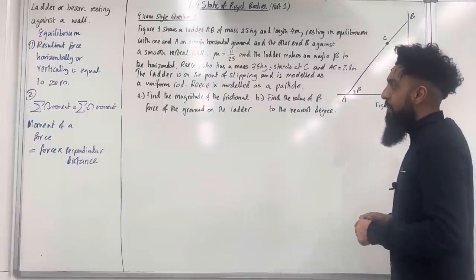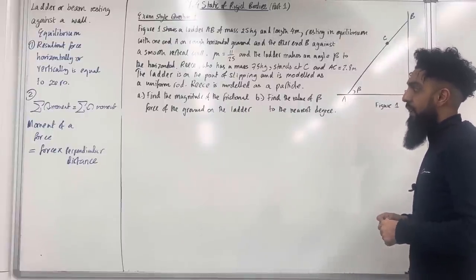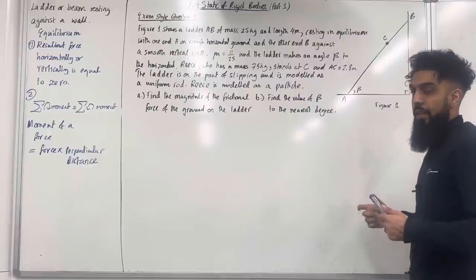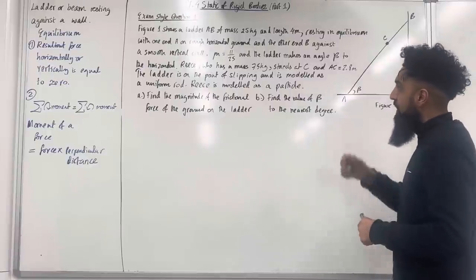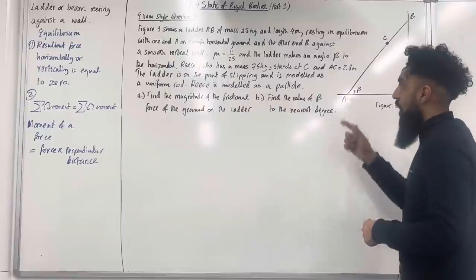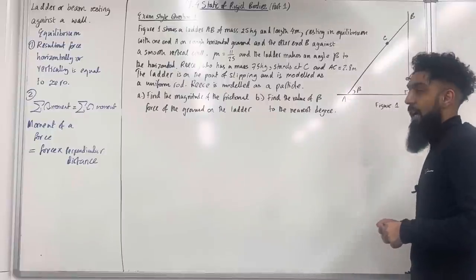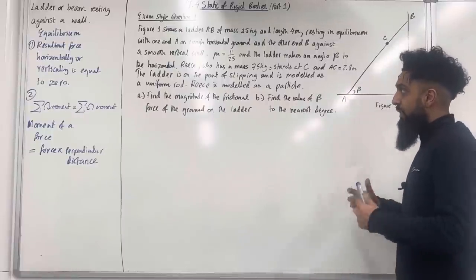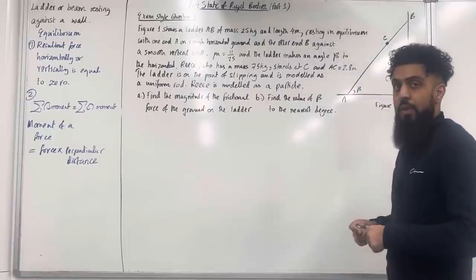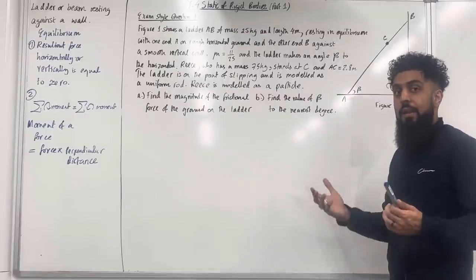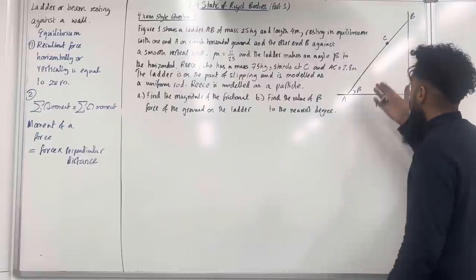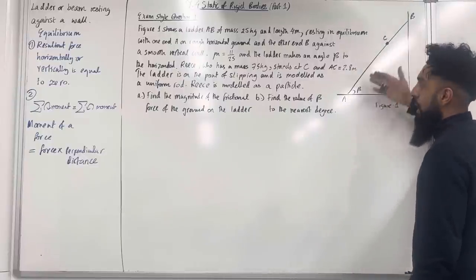Part A: find the magnitude of the frictional force of the ground on the ladder. Part B: find the value of beta to the nearest degree. I'm going to start this exam style question by labelling all the forces acting on this particular ladder.